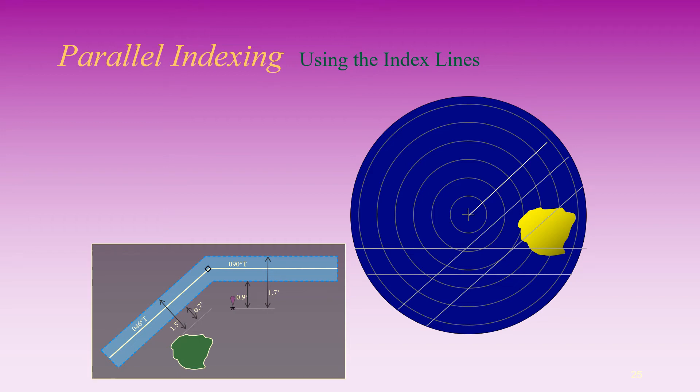During the first leg, 046 degrees true, the reference point, the northwestern edge of the island, appears right in the middle between the two 046 degrees true index lines. This indicates that the vessel is right in the middle of the traffic lane.